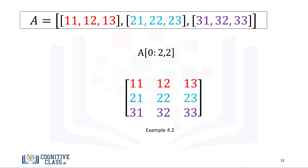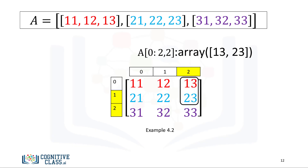Consider this example. The first index corresponds to the last two rows. The second index accesses the last column.